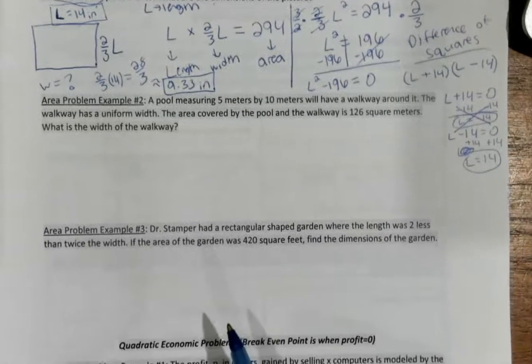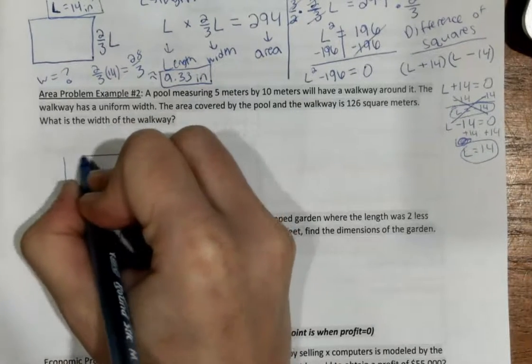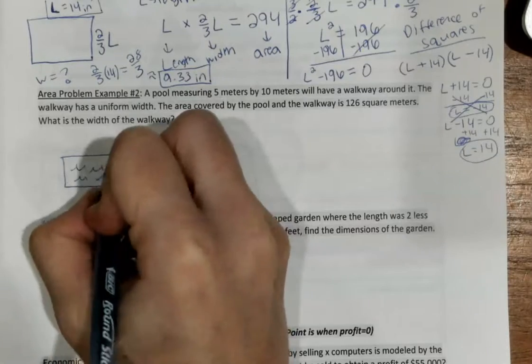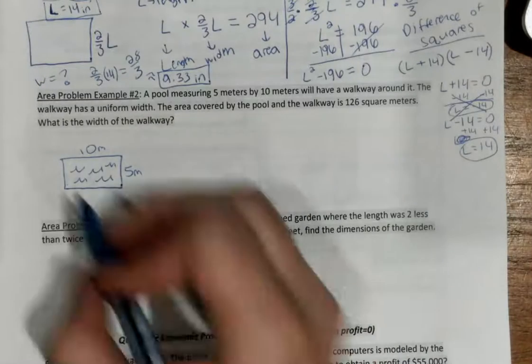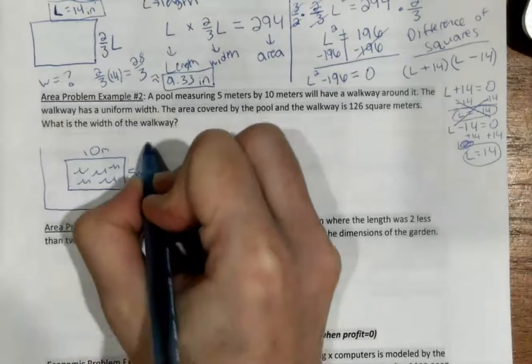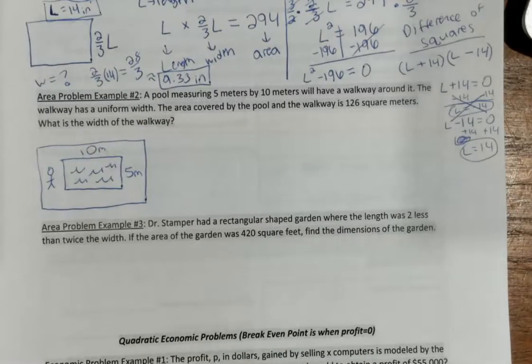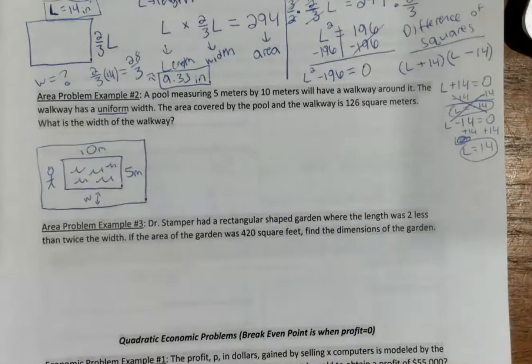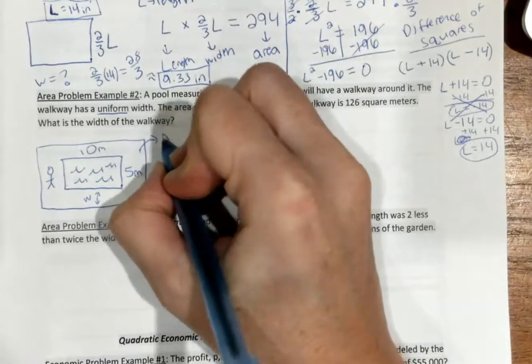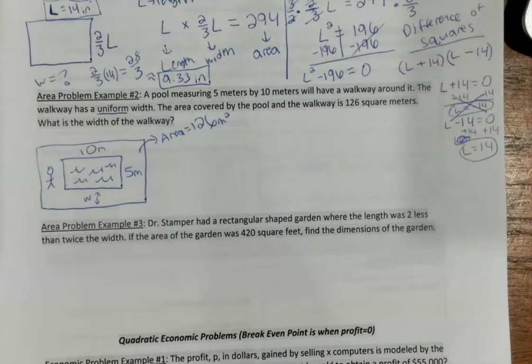You guys are doing well. Let's keep it moving. Number 2, a pool measuring 5 by 10 meters. This is my fancy pool. 5 by 10 meters. We'll have a walkway around it. Let me draw a walkway. Here's a person walking in it. It's going to have a uniform width. And that uniform means all the same. So, my width is the same all the way around. The area covered by the pool and the walkway, the total area is equal to 126 meters squared. What is the width of the walkway?